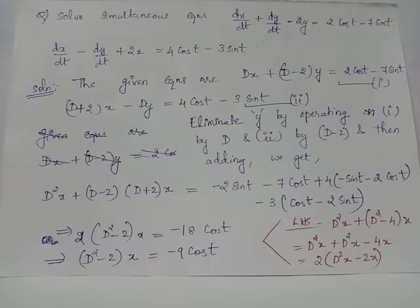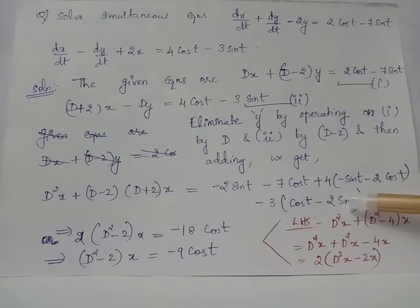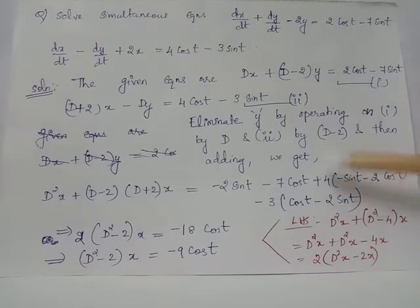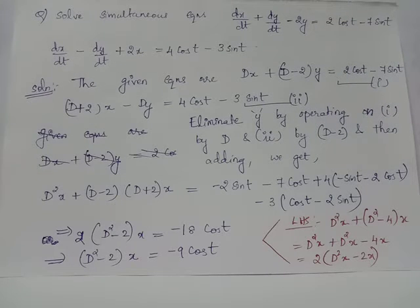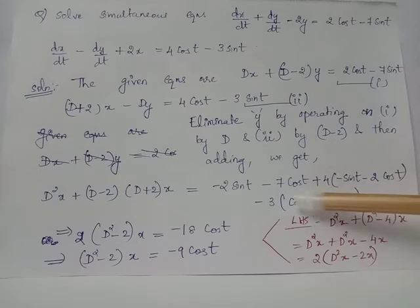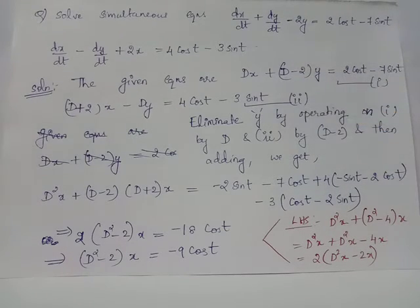We are left with D²x plus (D - 2)(D + 2) acting on x in the LHS. On the RHS, we obtain terms from operating D on the RHS of equation 1, and additional terms from operating (D - 2) on the RHS of equation 2.